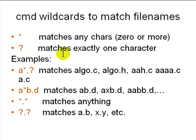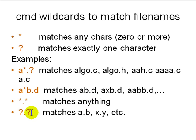CMD wildcards: star (*) means any characters, zero or more. Question mark (?) means exactly one character. So '*.?' matches any file name with a single-character extension like .c or .h. And '*a*b.d' matches filenames like 'ab.d' or 'axb.d'. '*.* ' matches everything; '?.?' matches a single character, dot, single character.